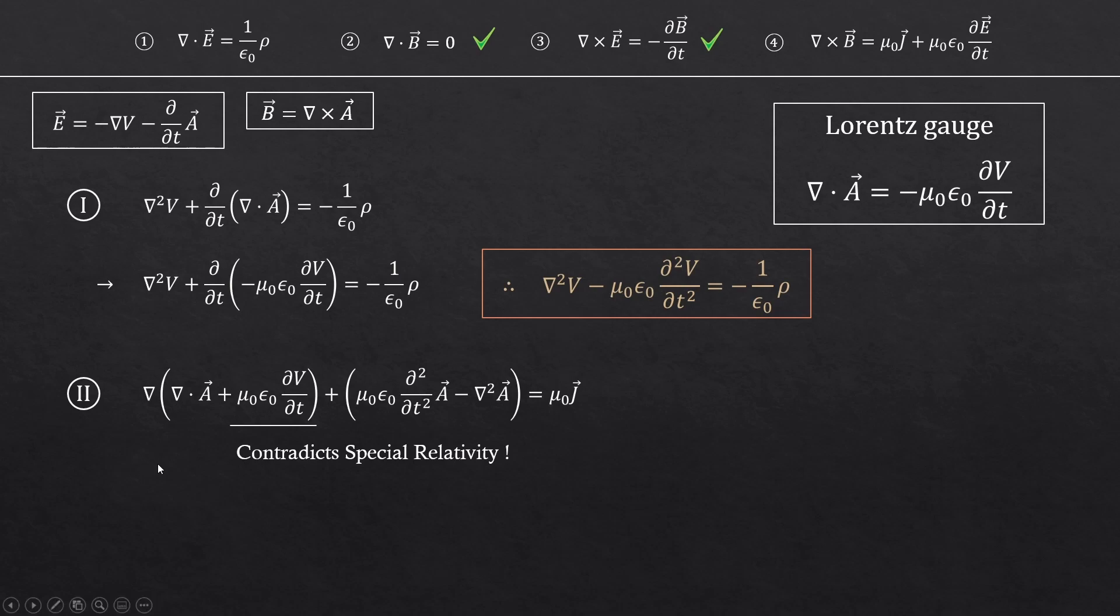Now let's look at the second equation. If we apply Lorentz gauge to this equation, we can completely erase this first bracket term and just keep the vector potential safely.